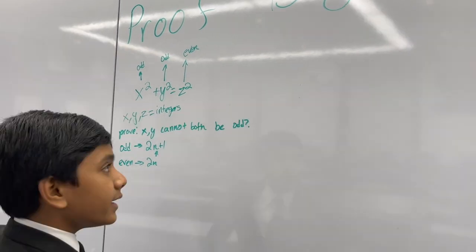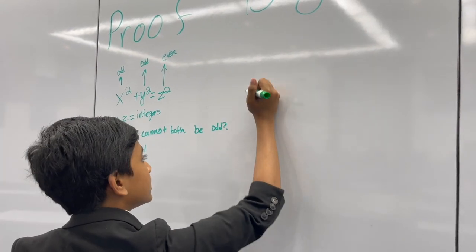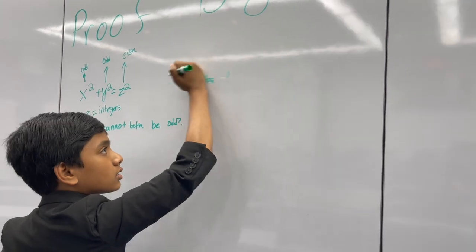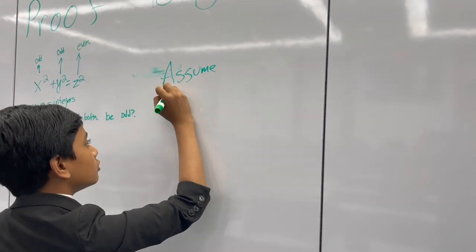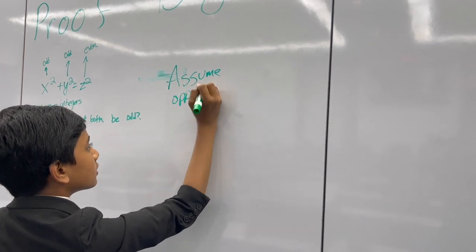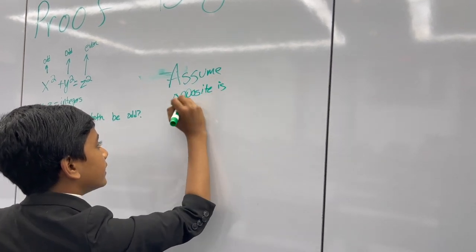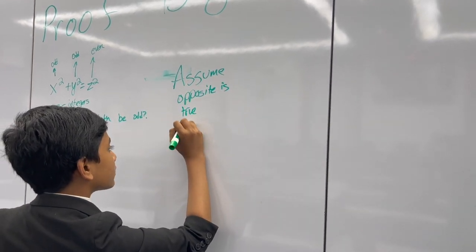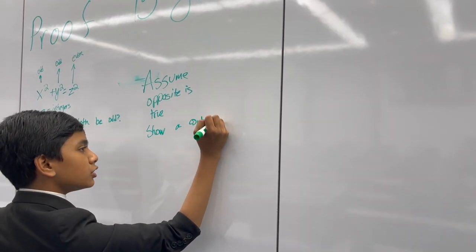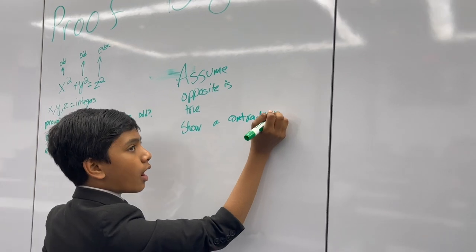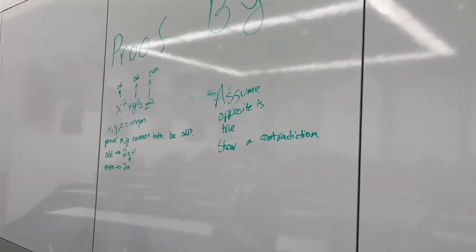The thing is, when we're doing proof by contradiction, we assume that the opposite is true, and then show where the contradiction is. Here, we're assuming that both x and y are odd, and then showing a contradiction.